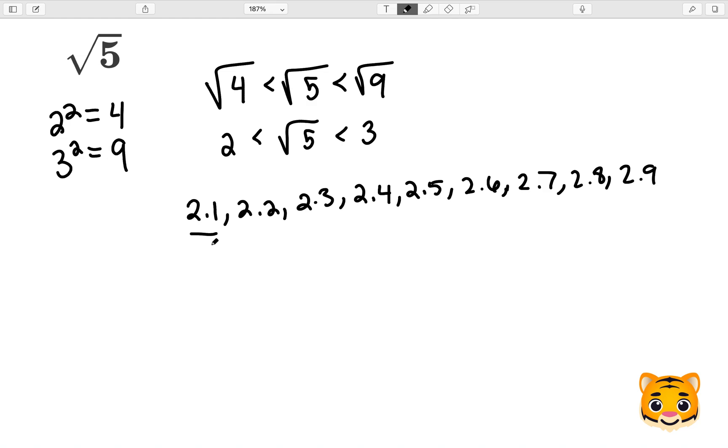So let's start at 2.1 and see if 2.1 squared gives us something close to 5. So we'll do 2.1 times 2.1. 1 times 1 is 1, 2 times 1 is 2, add our placeholder 0, 1 times 2 is 2, and 2 times 2 is 4. Now we can see we get 4.41 as our answer, which is close to 5, but not exactly 5.